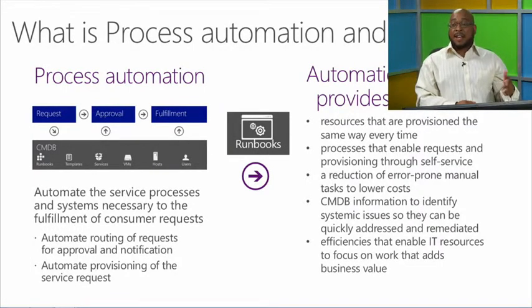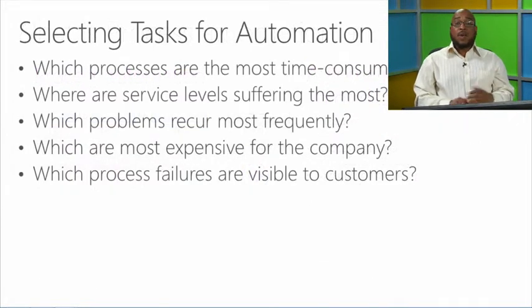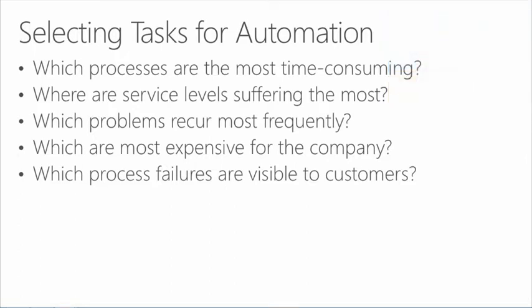We want to take advantage of CMDB information to identify systemic issues or problems within the environment. We first want to select the tasks we want to automate. Why automate them? What are the challenges? Which processes are most time-consuming? Start there — that's where staff are spending time doing the same thing over and over, and where we can best use their expertise elsewhere. Where are we not meeting SLAs because we're introducing errors or manually going through multiple systems to provision a resource?